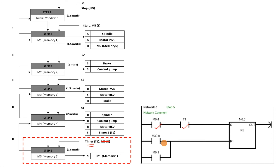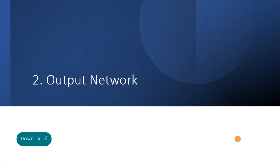That is how you translate the step sequence using memory. You just translate using the input conditions — the input conditions can come from sensors as well as the memory step. You have two inputs: the first one is for set and the second one is for reset. After you have done the step sequence network, only then can you move to the output networks. The output network will hold all the output conditions of each step.